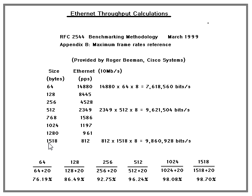With the largest standard Ethernet frame — 1518 bytes, not a VLAN frame — you can only get 812 frames per second, which gives you 98.6 percent efficiency, equating to 9.8 megabits in a 10 megabit pipe or 98.6 megabits in a 100 megabit pipe. These calculations closely match the maximum frame rates referenced in RFC 2544.